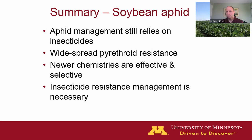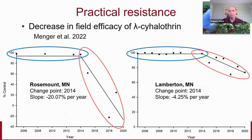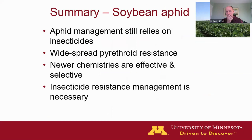On the question of why control dropped off more drastically at one location versus the other — comparing Rosemount and Lamberton — Bob admits they're not really sure. He would have almost expected things to drop off faster in southwest Minnesota because there are more persistent or chronic aphid issues there, but the data doesn't clearly explain it.